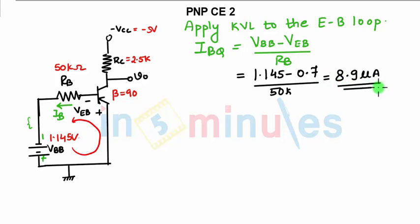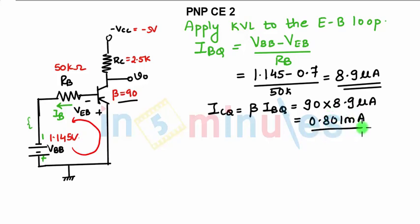Once you know the value of IBQ, you can find ICQ, which is nothing but beta times IBQ. What is the value of beta given? 90. So 90 multiplied by 8.9 micro amperes. That will be your ICQ, which is 0.801 milliampere.